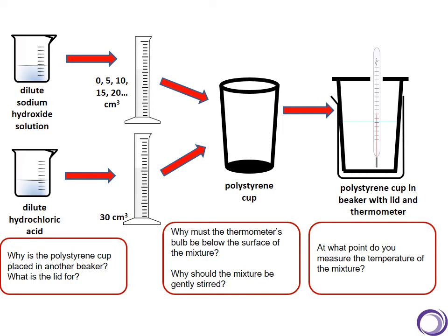So just taking another look at the equipment, reminding ourselves of a few things: Why did we put the polystyrene cup inside of another beaker? To stop it toppling over. Why did we put a lid? To stop the heat escaping. Why is it important that the thermometer's bulb be below the surface of the mixture? If it's not below the surface of the mixture, it's not measuring the temperature of the mixture. We need to make sure that we stir it each time to make sure the chemicals are fully mixed together, and we stop taking the temperature when it stops increasing.